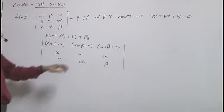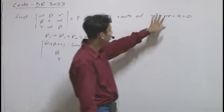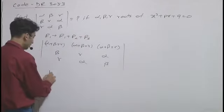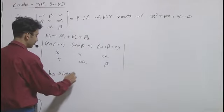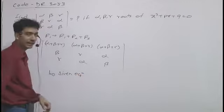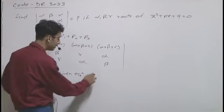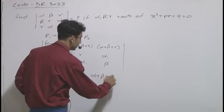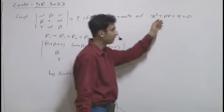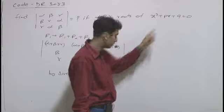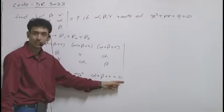But, as given in question, alpha, beta, gamma are roots of this equation. So, by given equation, if we take help of theory of equations, we can write alpha plus beta plus gamma equals 0. As coefficient of x square is 0 in the given equation, we can write alpha plus beta plus gamma as 0.